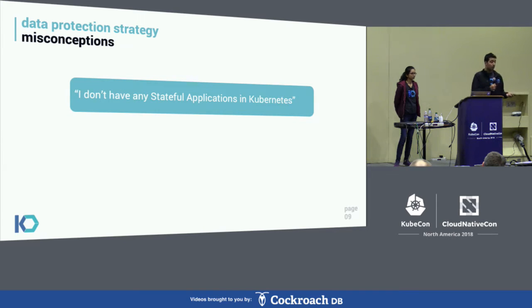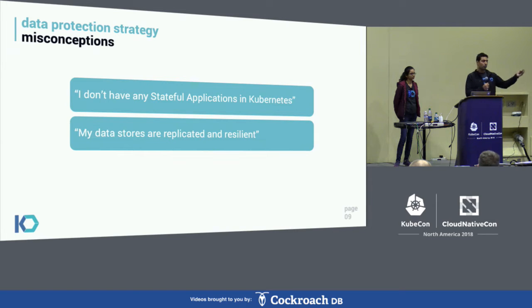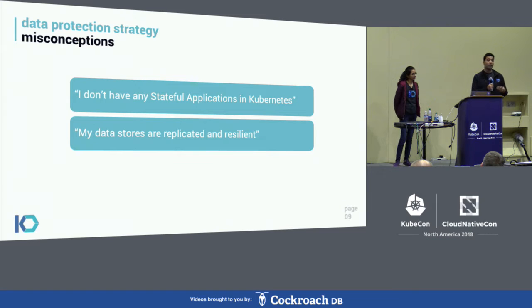The second misconception is 'My data stores are replicated — I'm using a cloud native database, so why do I need something like this?' Replication is great for resiliency and can help with infrastructure failures. But when it comes to accidental data loss, malicious data loss, or configuration issues, you still need a complete data protection strategy with point-in-time backup and recovery.